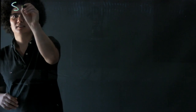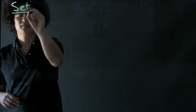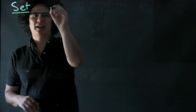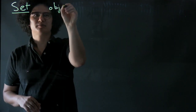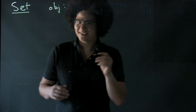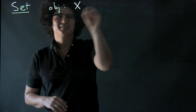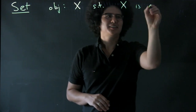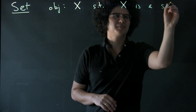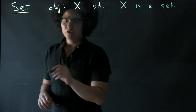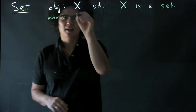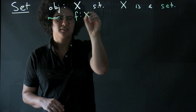First I want to talk about Set. Set is the category of sets and its objects are sets — {X such that X is a set}. And the morphisms are functions of sets.